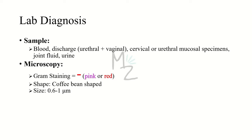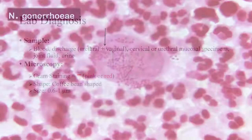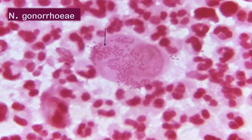Lab diagnosis: we'll need samples of blood, urethral or vaginal discharge, cervical or urethral mucosal specimens, joint fluid, and urine. Gram staining will reveal this is a gram-negative bacterium due to its pink or red color. Under microscopy, the bacterium is observed to be coffee bean or oval shaped, varying in size from 0.6 to 1 micrometer. As you can see in this picture, the bacterium is oval or coffee bean shaped, pink in color, and small in size.